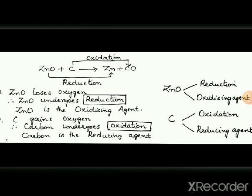Consider the equation ZnO + C → Zn + CO. Identify the substance oxidized, reduced, and also the oxidizing agent and reducing agent. For the reaction ZnO to Zn: zinc oxide loses oxygen, and loss of oxygen is reduction. Therefore zinc oxide undergoes reduction. Since zinc oxide undergoes reduction, it will act as an oxidizing agent.